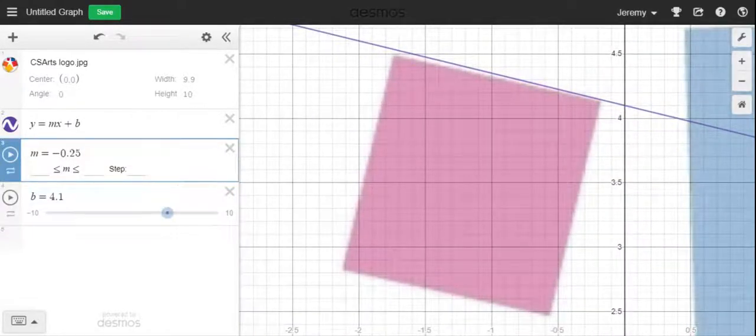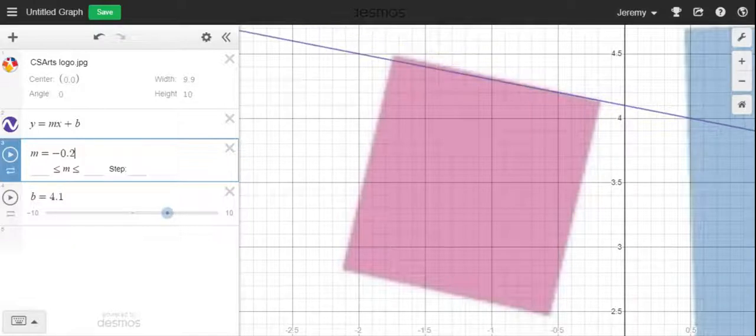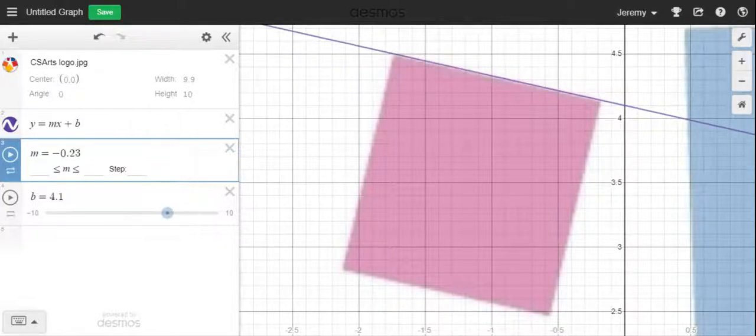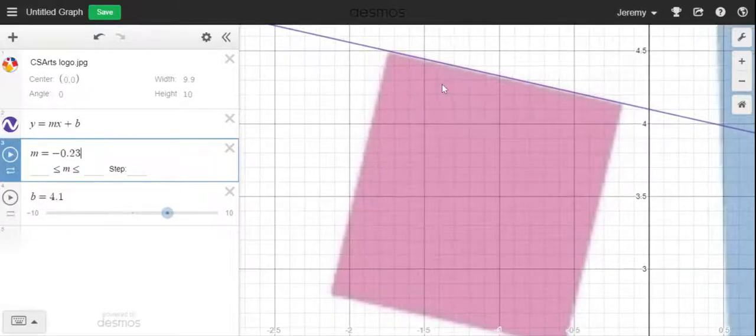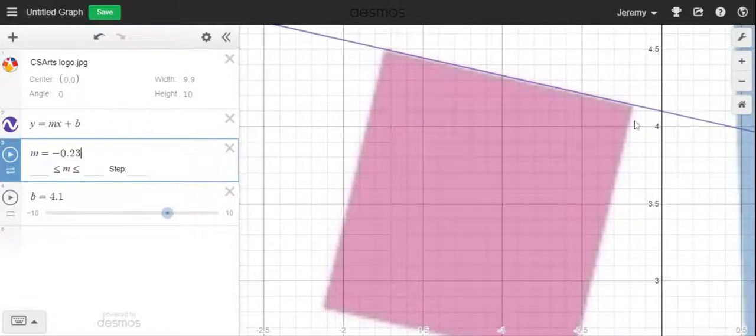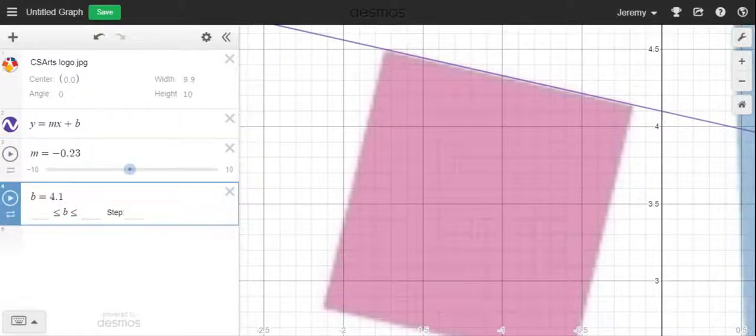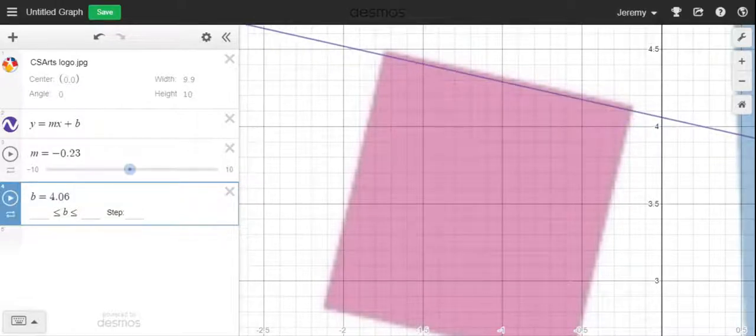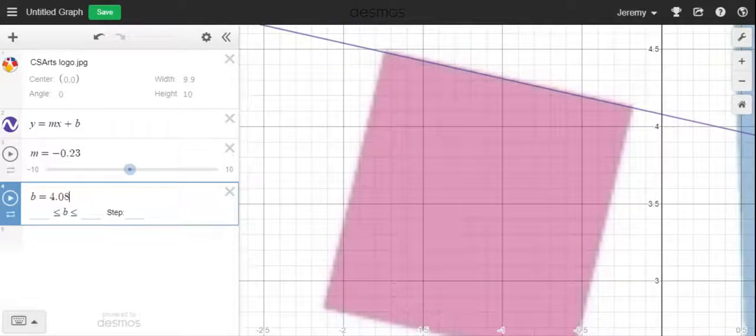Let me change this back because it's now too steep. Negative 0.2 is too flat. Trying 0.21, 0.22, 0.23. And now I can tell that I've got a little gap in here so I need to bring the y-intercept down a little bit. So 4.1 is too big. Let me try 4.05. Let me raise it up a little bit. 4.06, 4.07, 4.08. I like that.